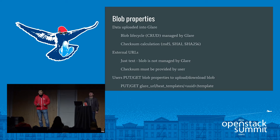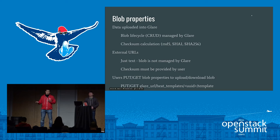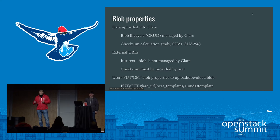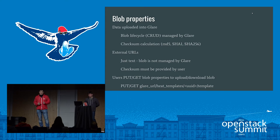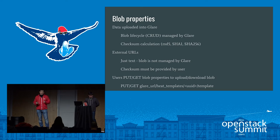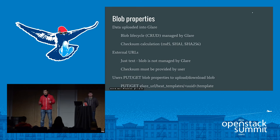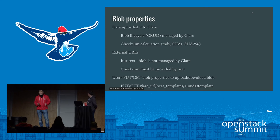There are two approaches to manage blob properties. The first approach is to upload data directly into Glare — you provide an image file or Heat template, and it gets uploaded to the Glare backend. After that, the entire lifecycle is covered by Glare; for example, when you delete a Heat template artifact, the referenced blob file in the Glare backend is also deleted. We also calculate checksums like MD5 for each blob. The second approach is to specify an external link instead of a blob, applicable when you have a file on an external HTTP server. In this case it's just a text reference in Glare, and Glare doesn't cover all lifecycle cases. The user must also manually specify MD5 checksums for this file.